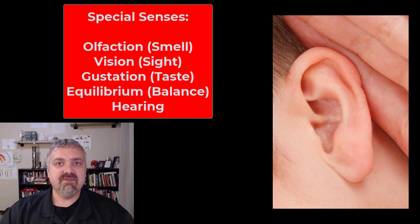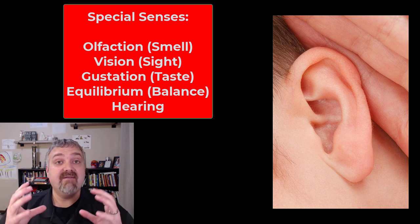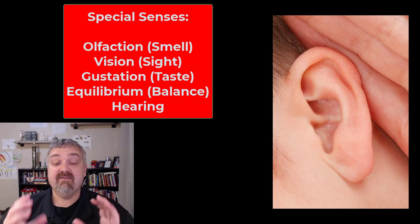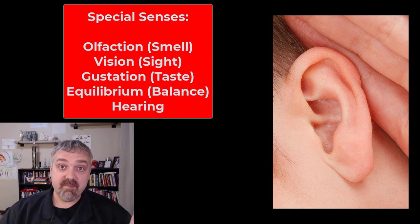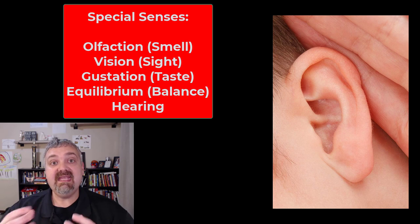Next we have the special senses. These are going to be covered in a separate area. But special senses are going to be the senses that have special sense organs and the information is being sent to different parts of the brain. This is going to be olfaction or smell, vision or sight, gustation or taste, equilibrium, which is balance, and then hearing.